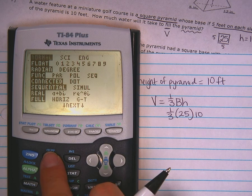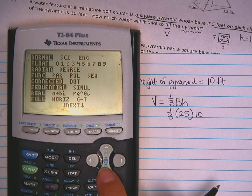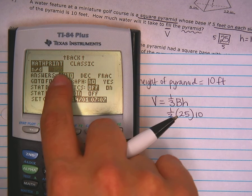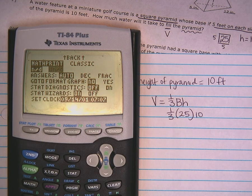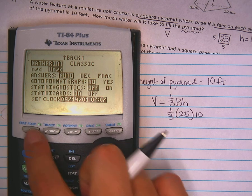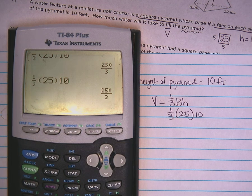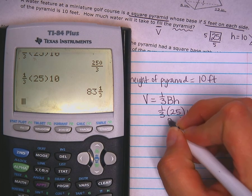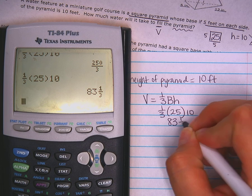And go to math. Let's go to mode. Let's see what's wrong with my mode. Let's go with, my answers are going to be mixed numbers. See if that works out. Everything else I think is good. So second, we'll quit. Enter. Okay, 83 and one third. 83 and one third.